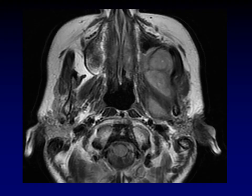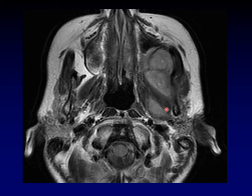The other major category of disease in the masticator space is tumors. For example, this large mass — look how it is pushing that parapharyngeal fat posteriorly and medially. This happens to be a mass that arose from the muscles of mastication. It's a malignant solitary fibrous tumor, which is an unusual histology.